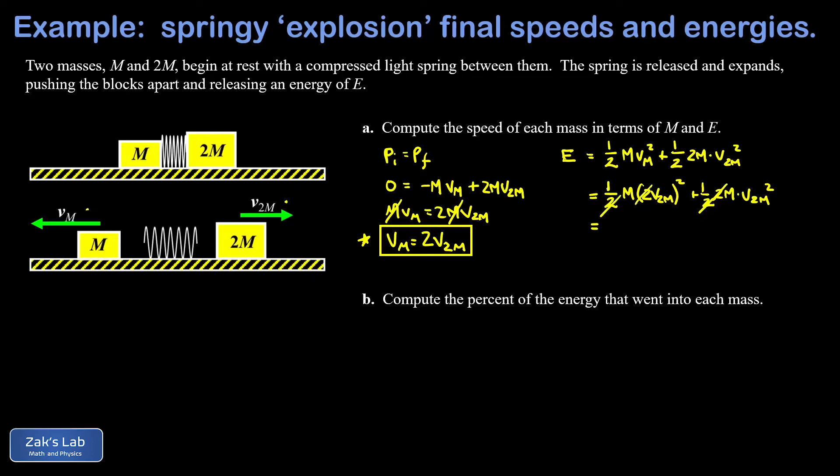So if I do the cancellation with the one-half out in front that gives me a grand total of 2 out in front. So I'll write 2m v2m squared plus m v2m squared which gives me a grand total of 3m v2m squared.